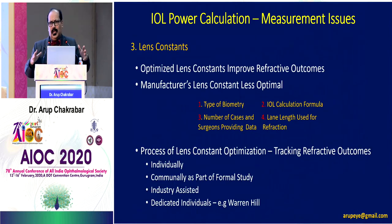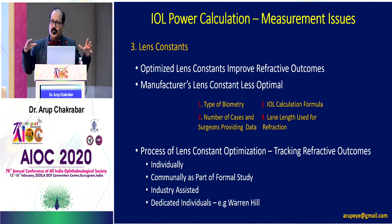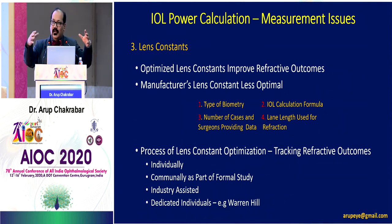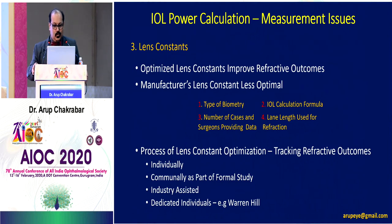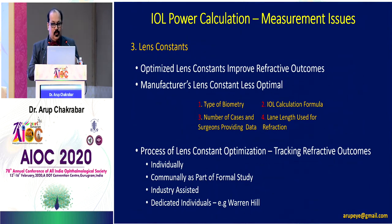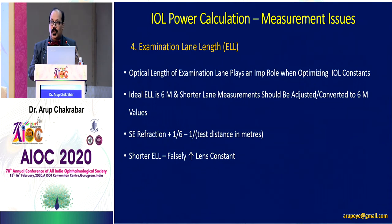Lens constants have become of somewhat less significance compared to what they were earlier. Today, most cataract surgeons perform surgery through a temporal clear corneal incision of 2.2 to 2.4 millimeters, with a small capsulorhexis and the lens kept within the bag. So the effective lens position for most cataract surgeons is more or less the same, and we have very good formulas and biometry methods available. A constant optimization is therefore not that much of an issue today. However, for any new lens that comes to the market, it becomes an issue, and you may need to know how to optimize the A constant for those patients.